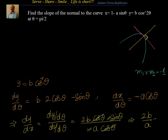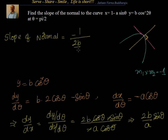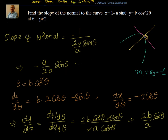Cancelling cos theta and the two negatives, dy by dx simplifies to 2b by a times sin theta. The slope of the tangent is 2b sin theta by a, so the slope of the normal is minus 1 by (2b by a sin theta), which equals minus a by (2b sin theta). At theta equal to pi by 2, sin 90 equals 1, so the slope of the normal is minus a by 2b.